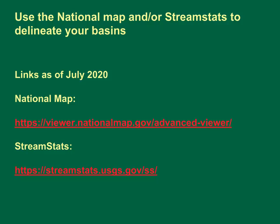Hopefully, you learned to use the National Map and/or StreamStats to delineate your basins in this class exercise. The links for the National Map and StreamStats as of July 2020 are: https://viewer.nationalmap.gov/advancedviewer for the National Map and https://streamstats.usgs.gov/ss/ for StreamStats.